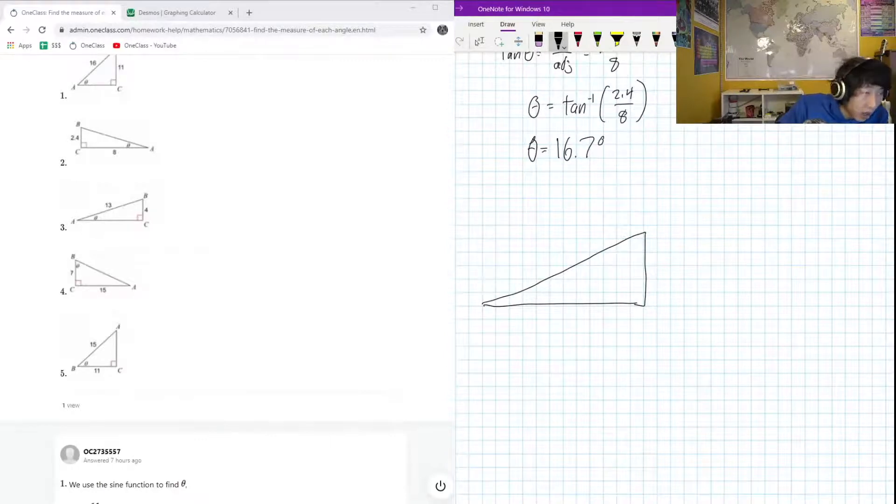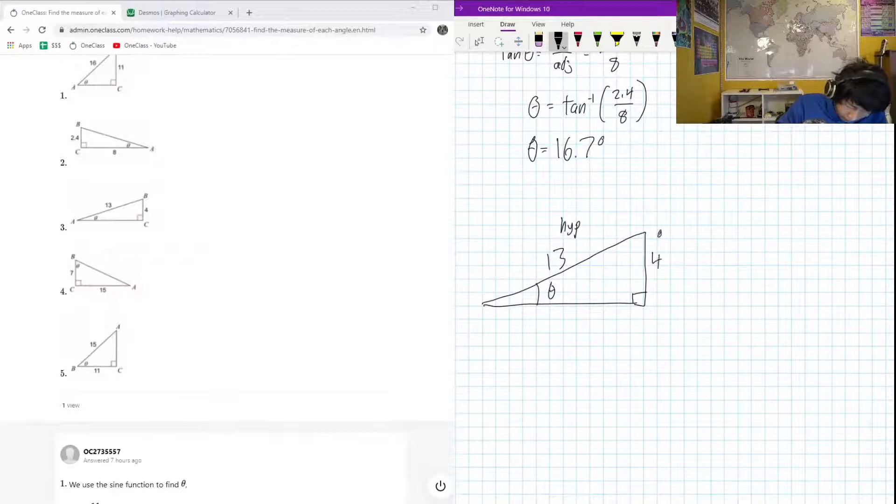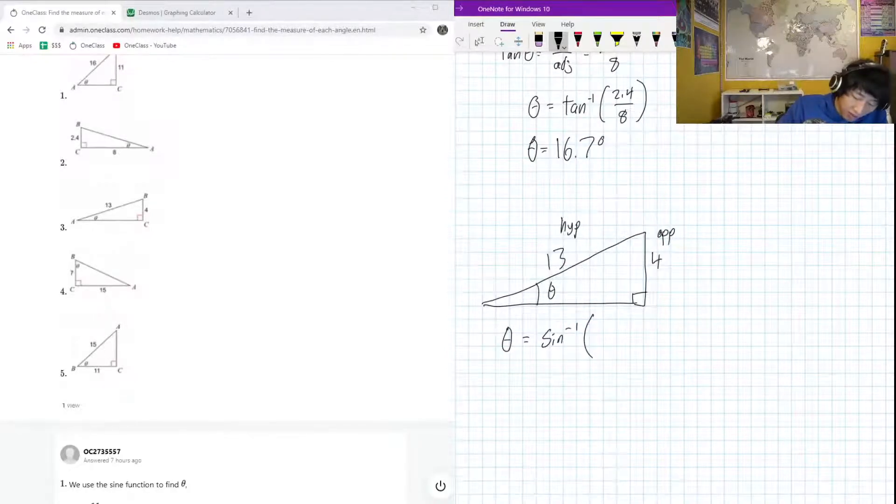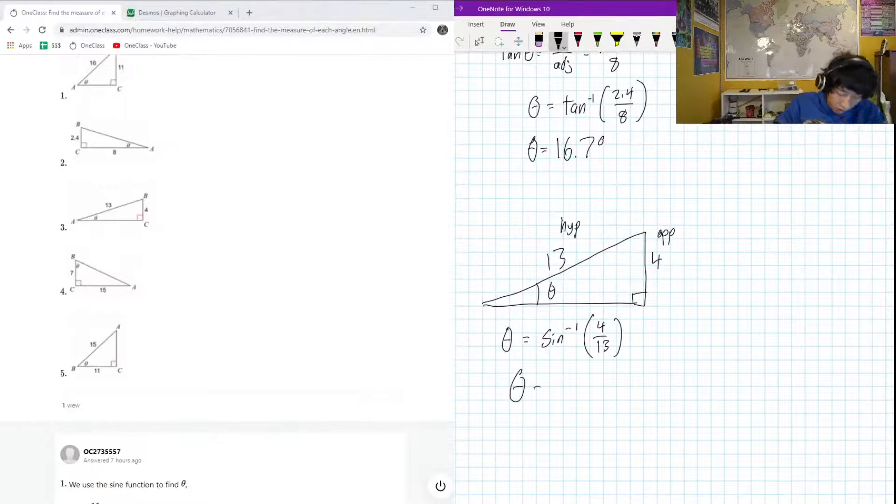We got 13 on the hypotenuse, the angle is here, that's hypotenuse, and here we have 4 on the opposite. Okay, another sine situation. We can just set this up because we know that we're going to have to do the inverse sine - this is going to be opposite over hypotenuse, 4 over 13.